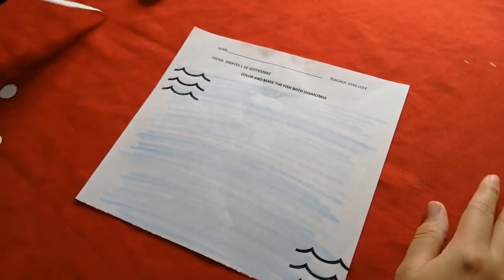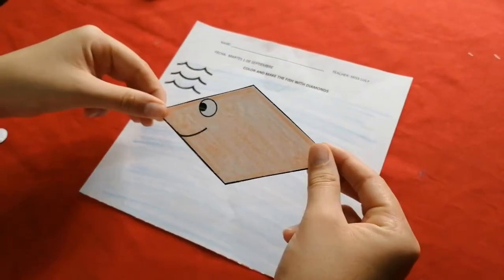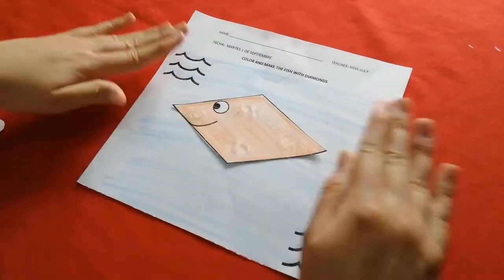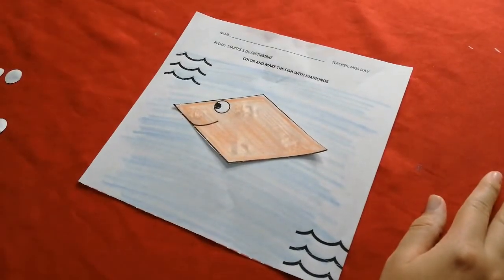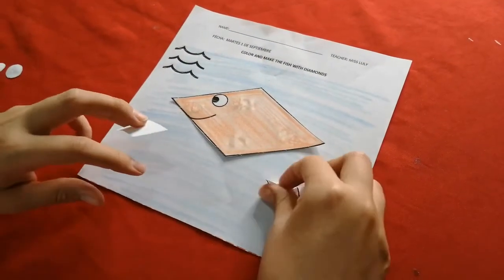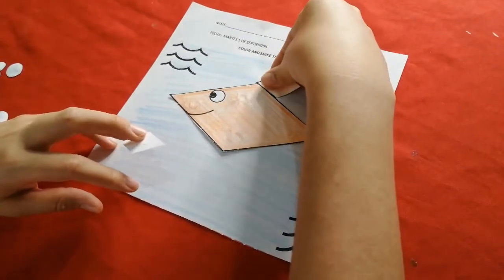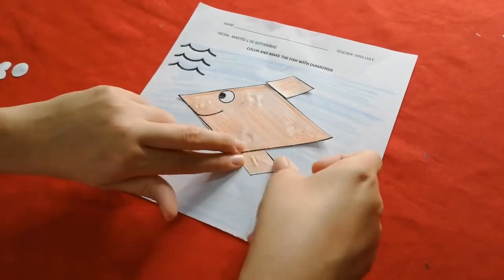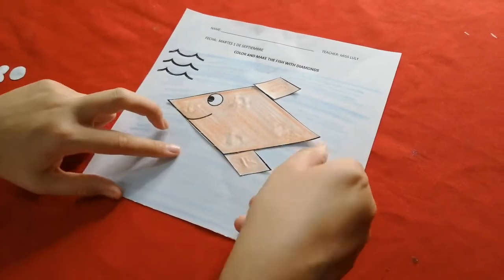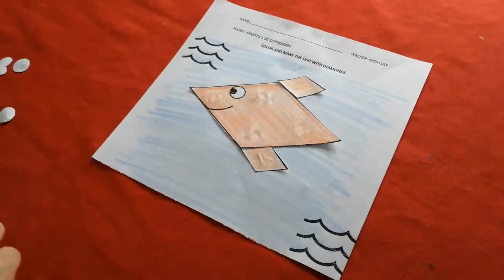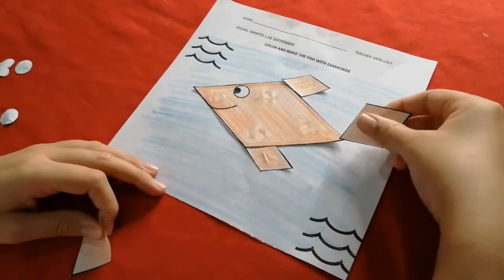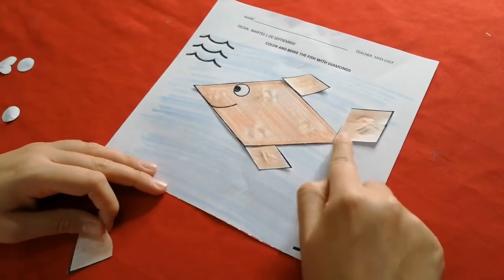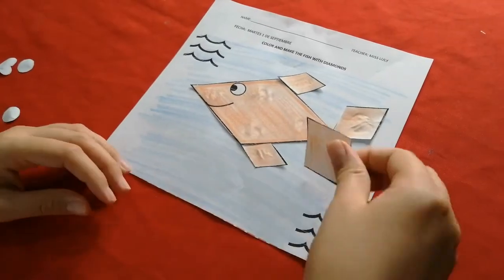Now, paste the big diamond. Very good. Now, the small diamond. One, two. Very good. Other diamond. One, and diamond. Two.